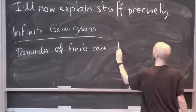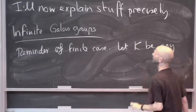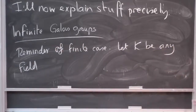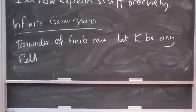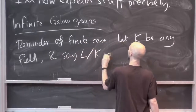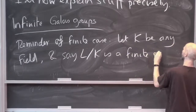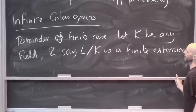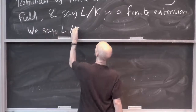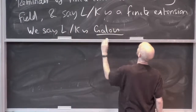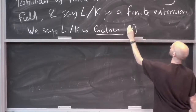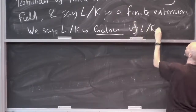Let K be any field. From the point of view of undergraduates, Galois theory goes as follows: let L over K be a finite extension. We say L over K is Galois if it's normal and separable. Separable is an issue you only have to check in characteristic p; normal just means it's a splitting field.